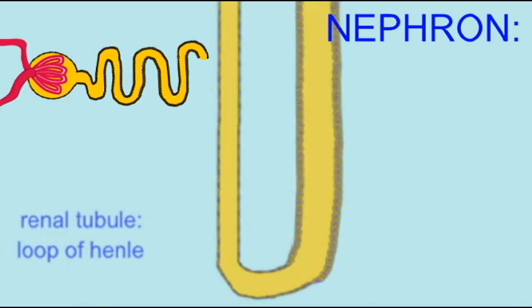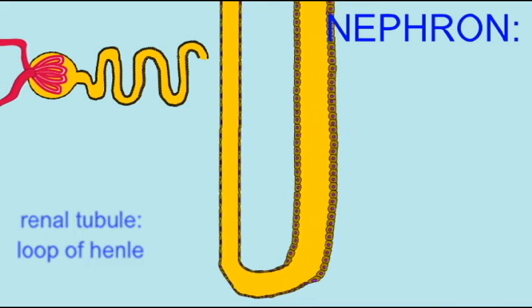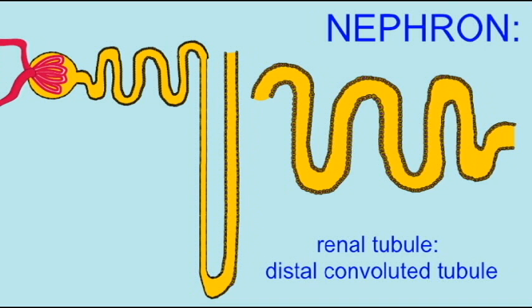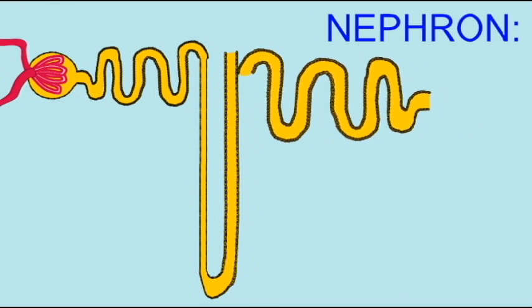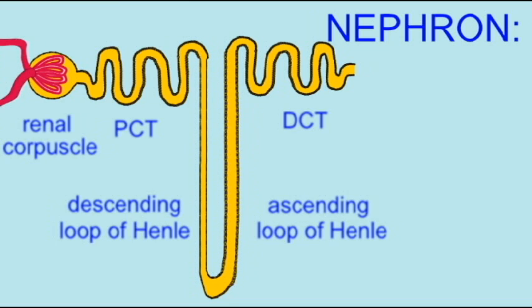This type of reabsorption occurs all the time and cannot be regulated. In contrast, the DCT and the neighboring collecting duct, hormones can influence the reabsorption and secretion which occurs here. And this is known as facultative reabsorption. And the body can thus regulate what occurs in these areas depending on its needs.